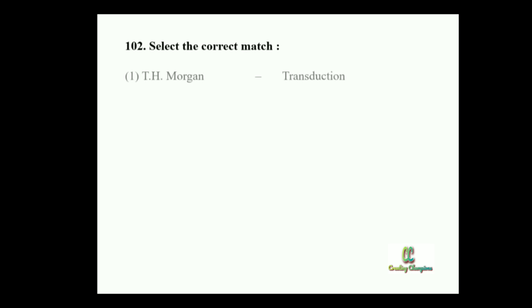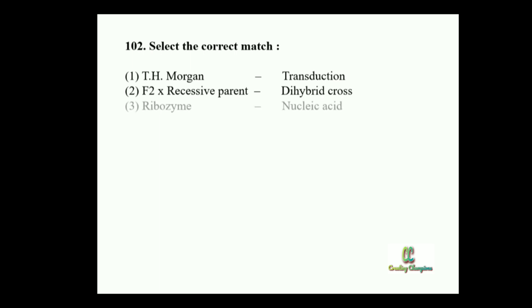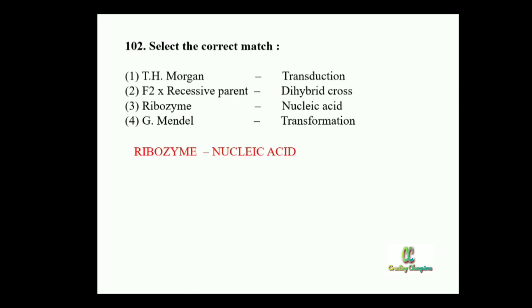Next question: Select the correct match. Option 1: T.H. Morgan — transfection. Option 2: F2 crossed with the recessive parent — dihybrid cross. Option 3: Ribozyme — nucleic acid. Option 4: Gregor Johan Mendel — transformation. The correct match is option number 3: ribozyme — nucleic acid.